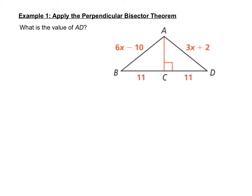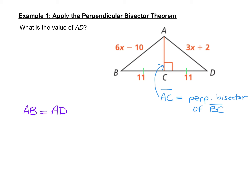Let's apply the perpendicular bisector theorem. What is the value of AD? First, observe that AC is the perpendicular bisector of BD — perpendicular as marked by the 90-degree angle, and a bisector because BC and DC are both 11, cutting segment BD into two equal halves. Since point A is along that perpendicular bisector, by the theorem, AB must equal AD. We can substitute our expressions: AB is 6x minus 10, and AD is 3x plus 2.